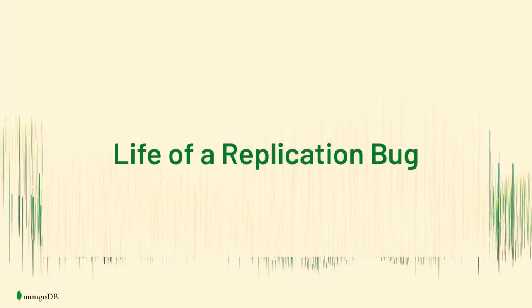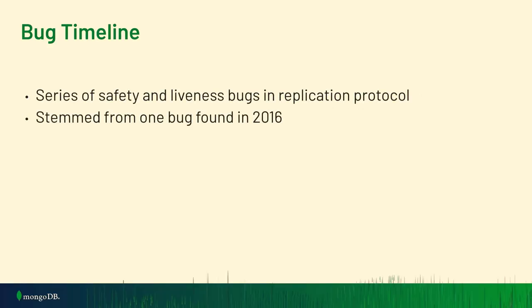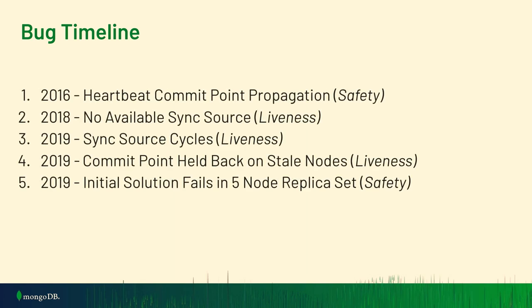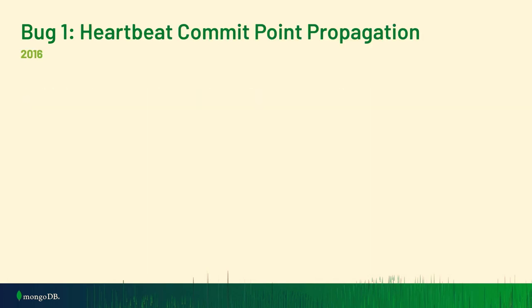Now I'm going to go through a series of bugs that appeared in the replication protocol. It really all stems from this genesis bug found in 2016. These are five bugs I'm going to talk about in some detail, starting with the first bug that came up in 2016.